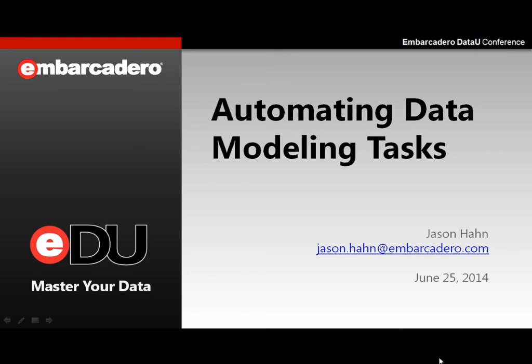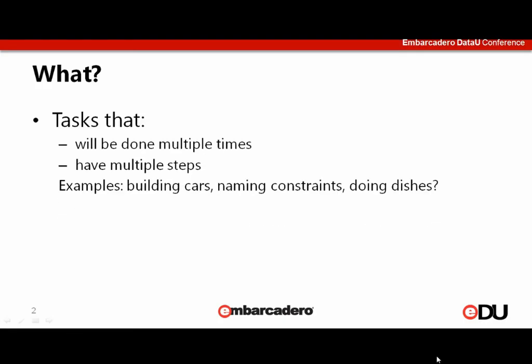Let's start with the what of automation. What tasks can we accomplish through automation? Well, anything that you have to do multiple times is a candidate for handling through automation. Also, tasks that have multiple steps are good candidates, because the more complex the actions you're taking, the more potential gain there is to avoiding doing them manually. There are a ton of things that can benefit from all kinds of automation. When you build cars, you're doing the same steps over and over again. When you're naming constraints in your data model, you're following the same basic rules over and over again.